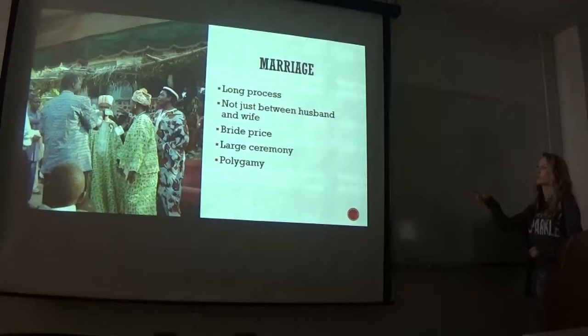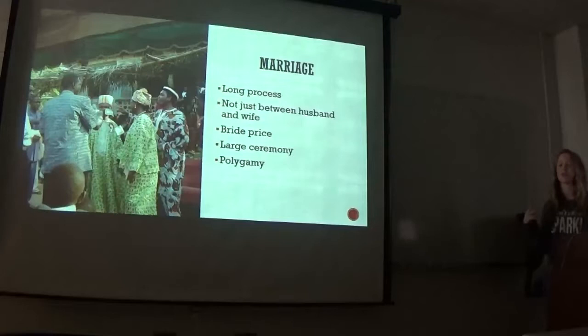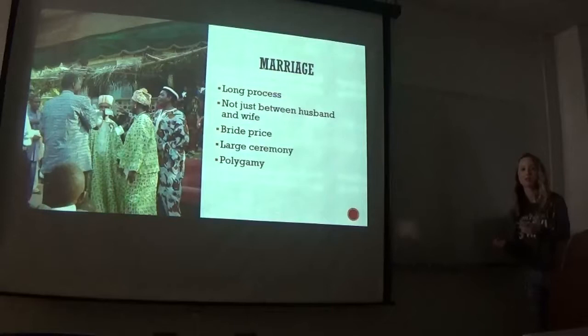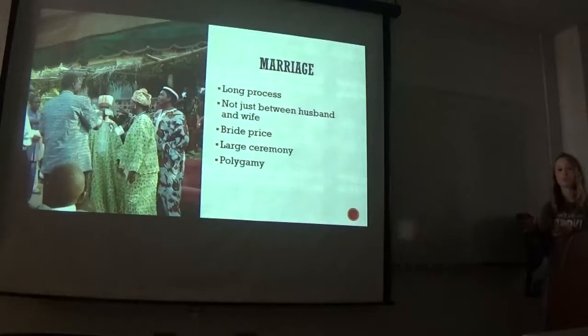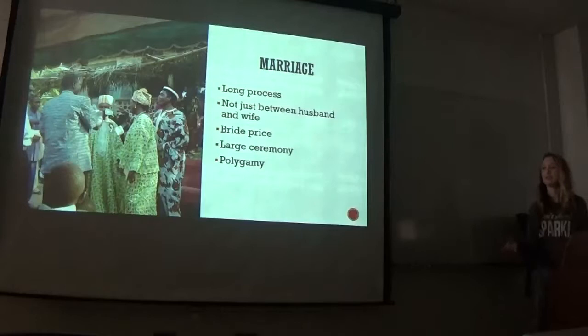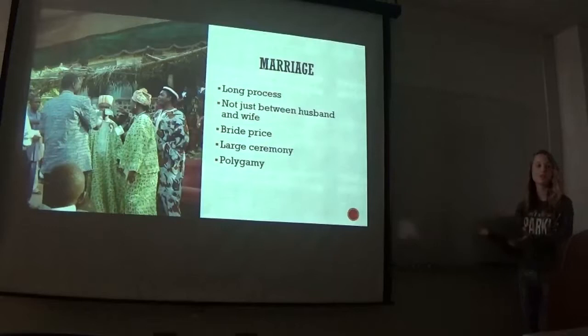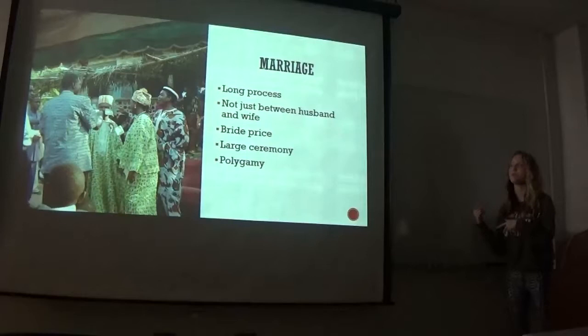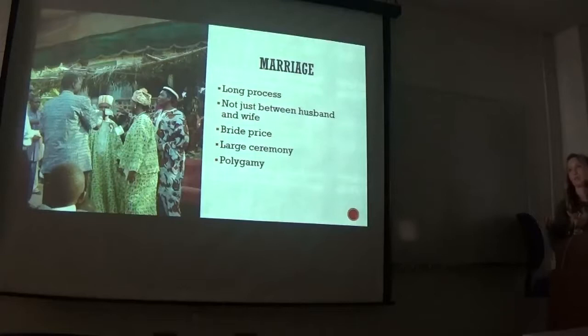The men in Igbo practice polygamy throughout this novel, obviously. They have more than one wife and the reason for this is because the bigger the family, the more you can produce agriculturally. Agriculture and how you're farming is actually like a large indicator of how much wealth you have in Igbo society. More children means more people to help do the labor on the farm. So more wives means more wealth, basically.